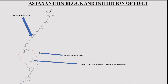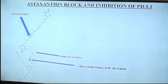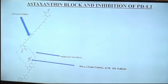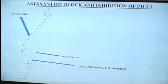This is the astaxanthin molecule — big head, long chain, big head. This is the reactive site of a PD-L1 being expressed from a tumor cell. As you can see, it has a carboxylic group with a double-bond O and an OH. This part of the astaxanthin molecule will bind through hydrogen bridging and hydrogen bonding directly to that OH group. Being one bond length away, it wraps the OH down underneath and sits there as a blocking agent for the PD-L1 function site.